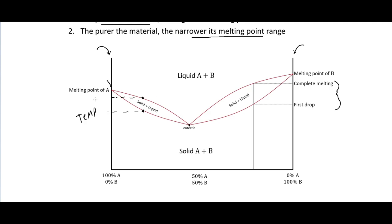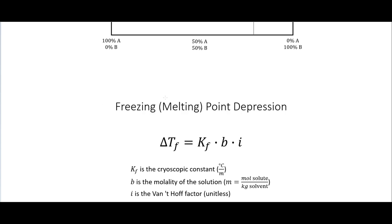If we have something we think is pure A, we can melt a known pure A sample (perhaps bought from Sigma-Aldrich) and compare its melting point to our unknown sample. If they are the same, our sample is pure. If the known sample is at the correct melting point but ours is lower with a broader range, that tells us our sample is not actually pure.